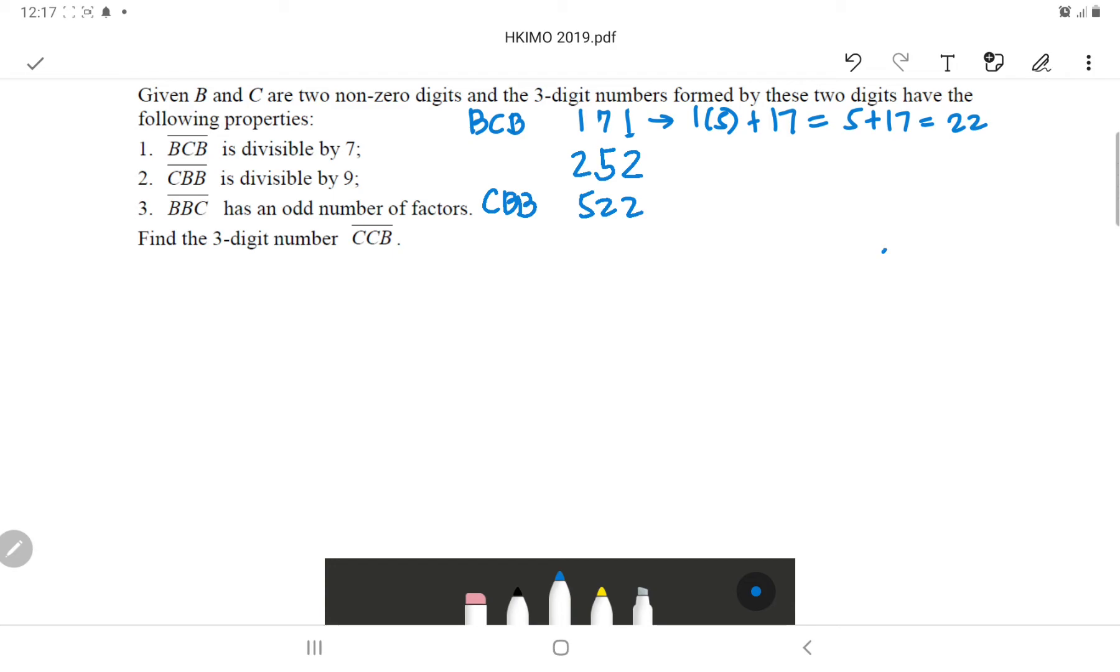Let's check if 2, 5, 2 is divisible by 7. First, you get the last digit, which is 2, multiplied by 5. Then add it to the remaining number, which is 25. 2 times 5 is 10, plus 25, which is 35. Yes, 35 is divisible by 7. In fact, when 35 divided by 7, that is 5. So meaning 252 is divisible by 7. So the first condition is satisfied, and also the second condition.